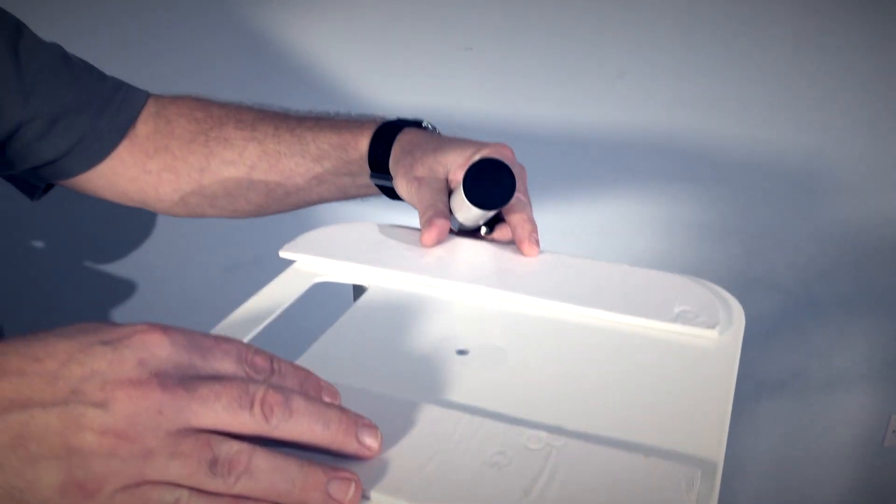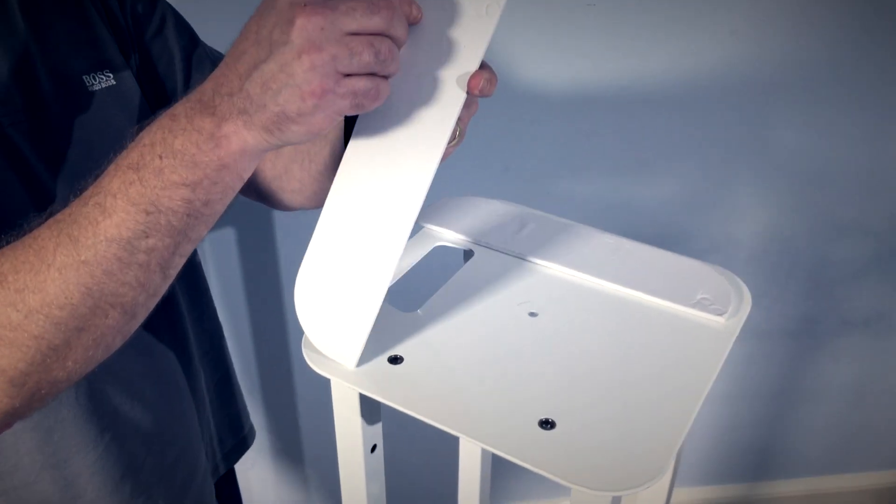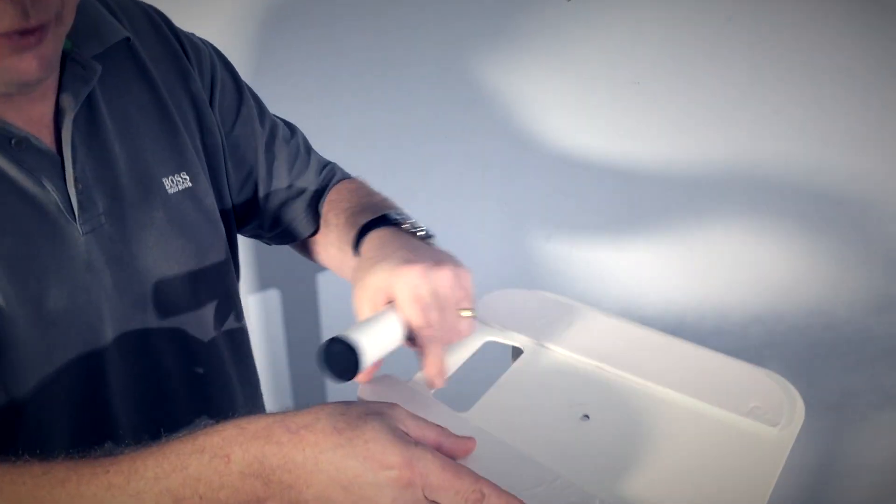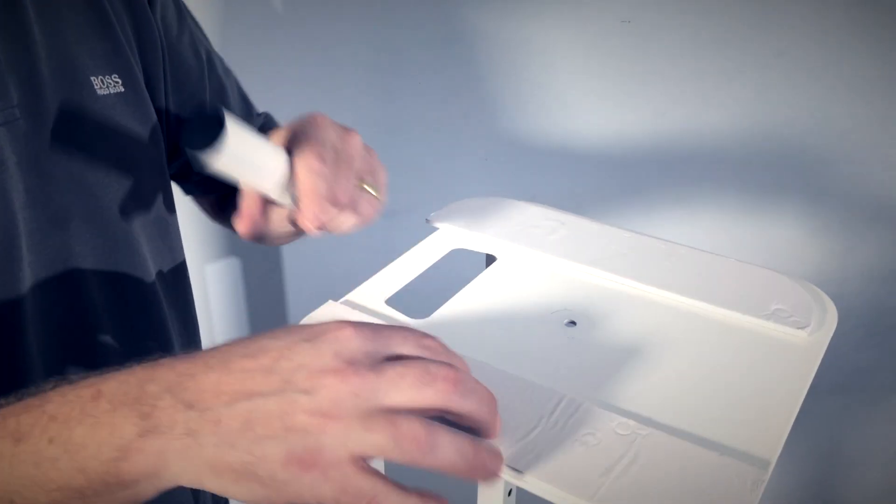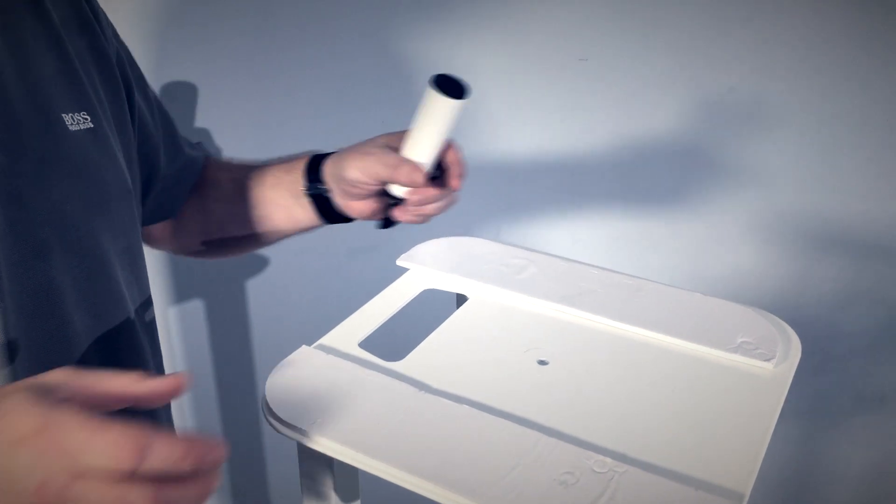Supplied non-slip foam pads can be attached to the top plate of the stand. Simply remove the protective backing and affix onto the top plate. This is useful for larger lighting effects or speakers placed on the stand.